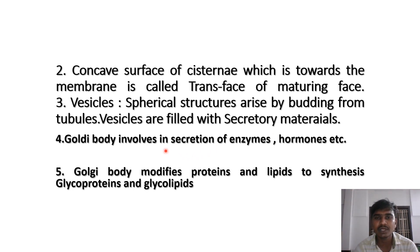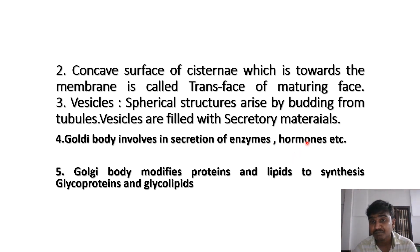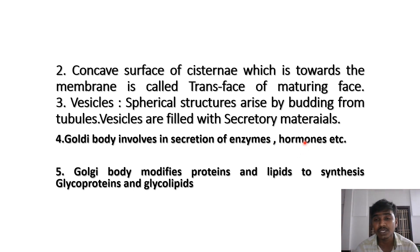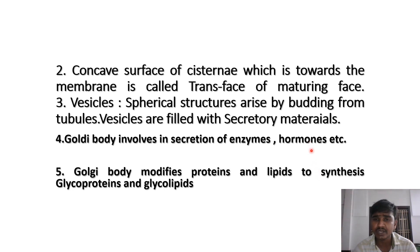The Golgi body is involved in the secretion of enzymes and hormones. In the human body, approximately 25,000 to 30,000 enzymes are present. Various hormones are secreted, including adrenaline, luteinizing hormone, follicle-stimulating hormone, testosterone, estrogen, and progesterone.